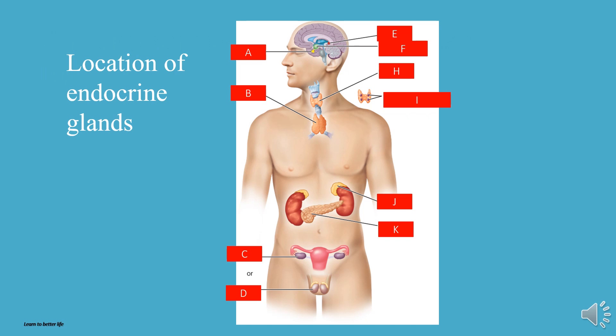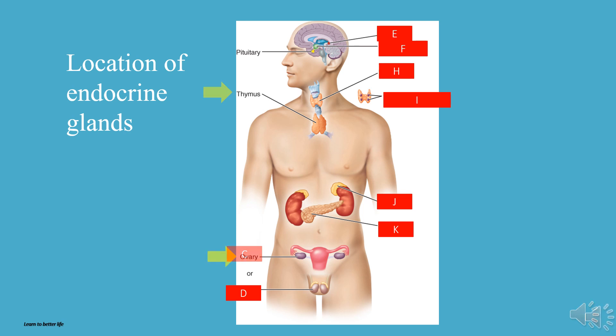Let's learn a few locations of endocrine glands. We will start with letter A. A is the pituitary gland. It has two compartments: anterior and posterior. B is the thymus. C is the ovary. D is the testis.